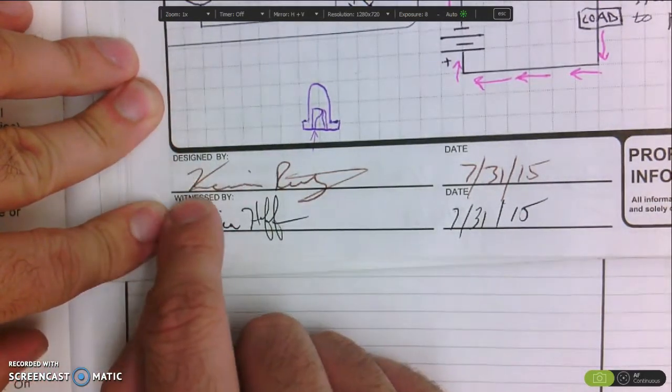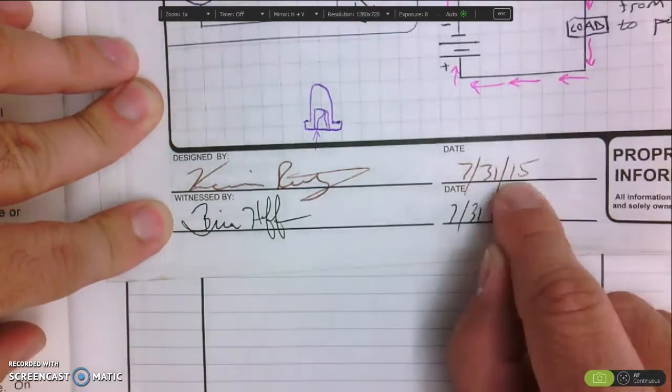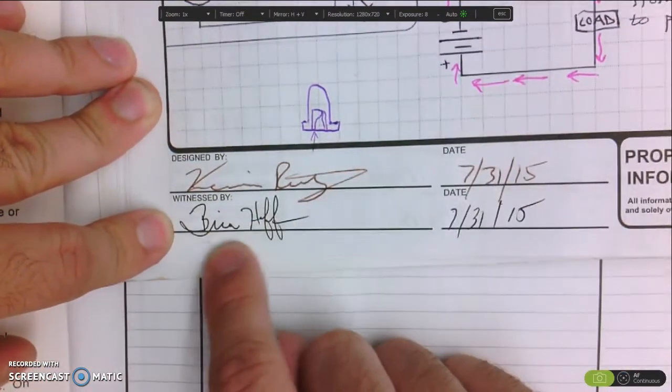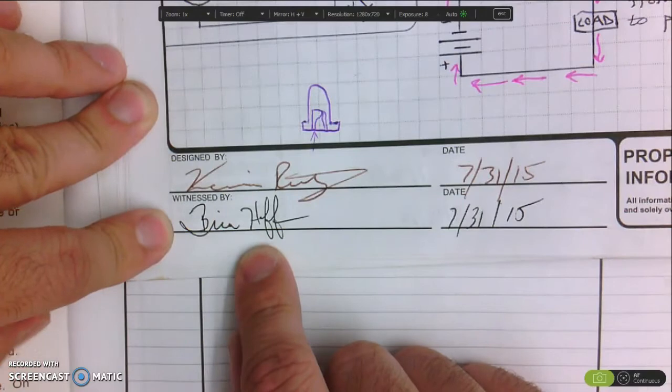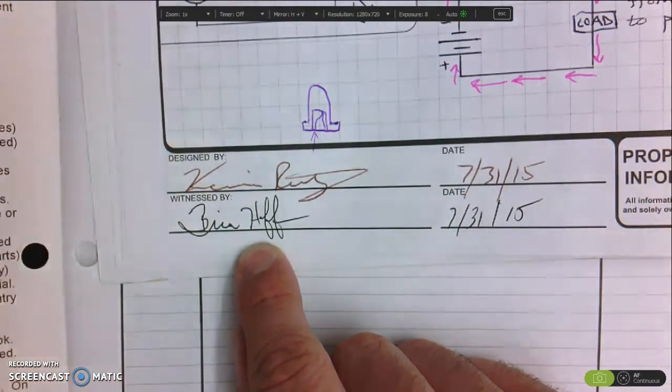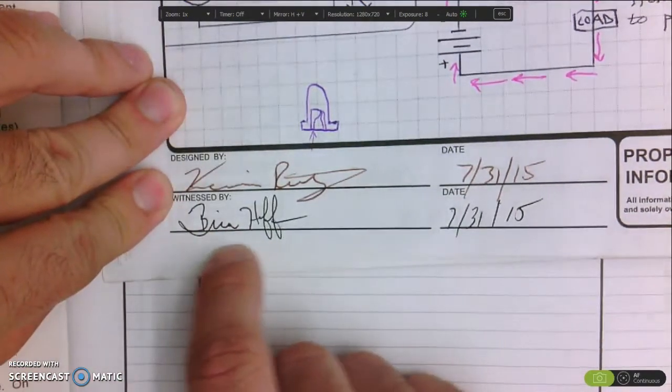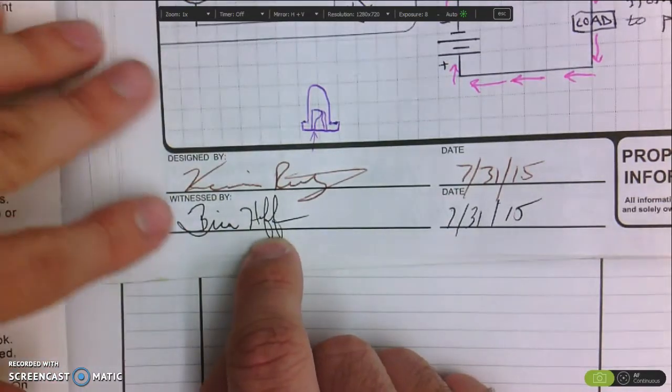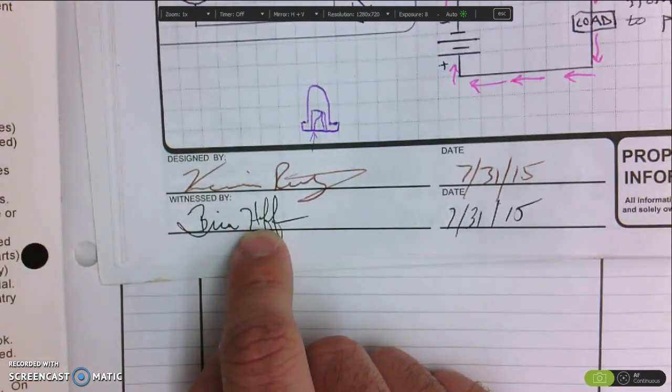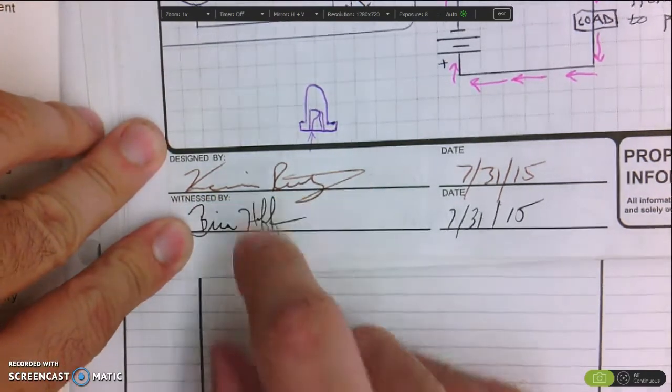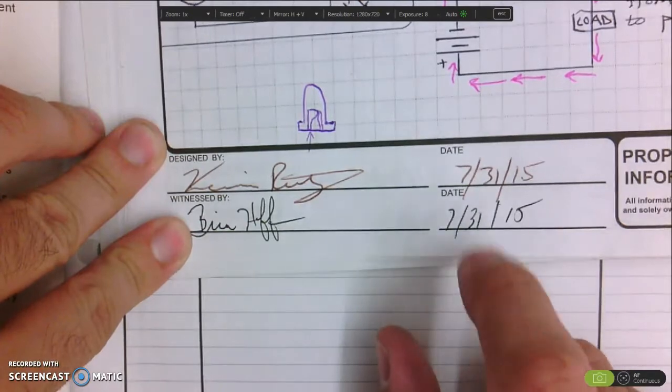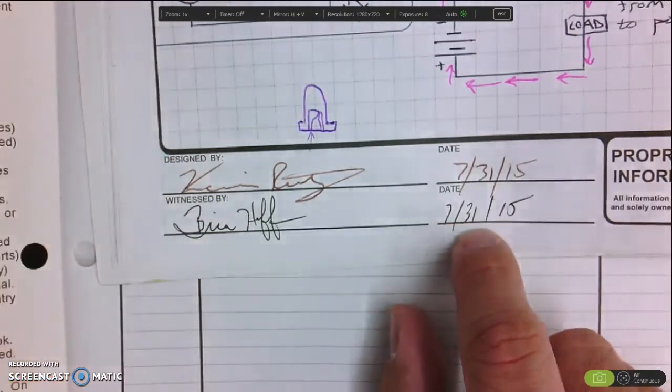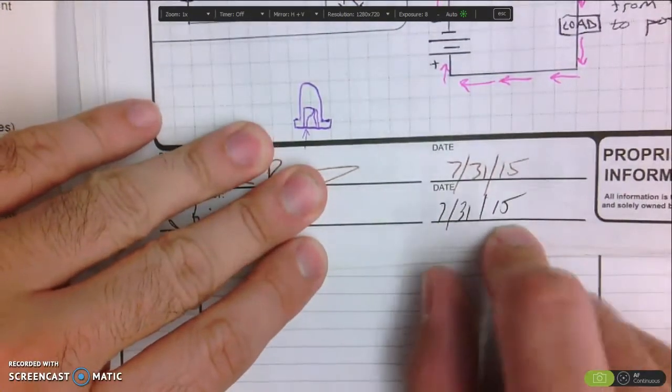You're the designer so you put your name, you put the date you finished it and then you get somebody who has either worked with you or that you've known for a long time. They will autograph it and they'll be your witness. So if ever it did go to court they could testify or get on your side and say yes Kevin totally did this and I said that he did it July 31st 15.